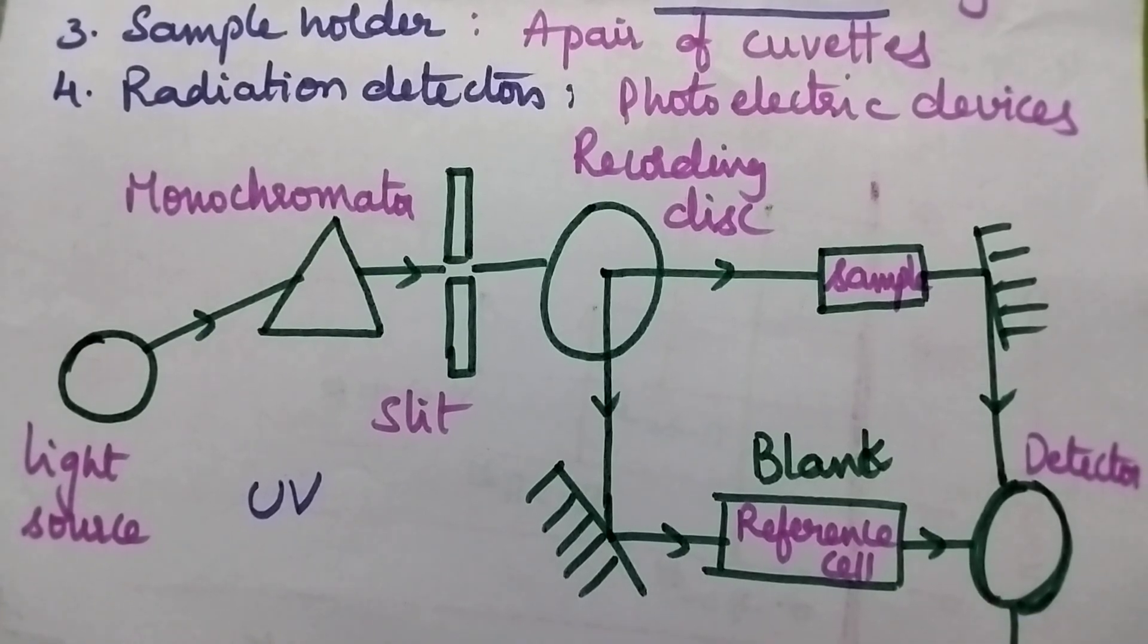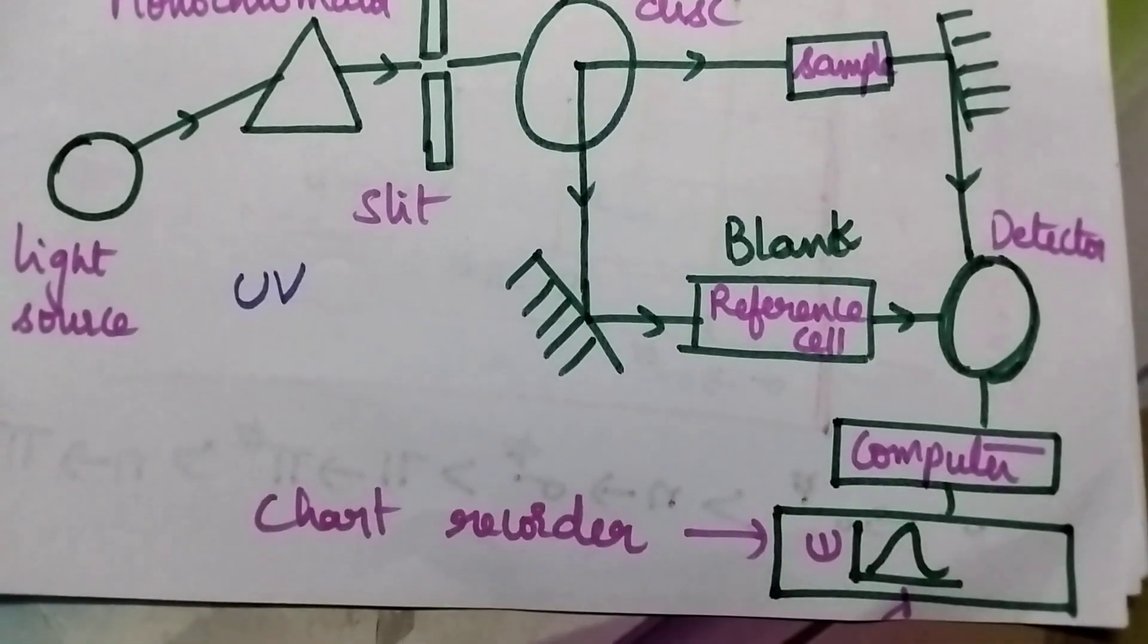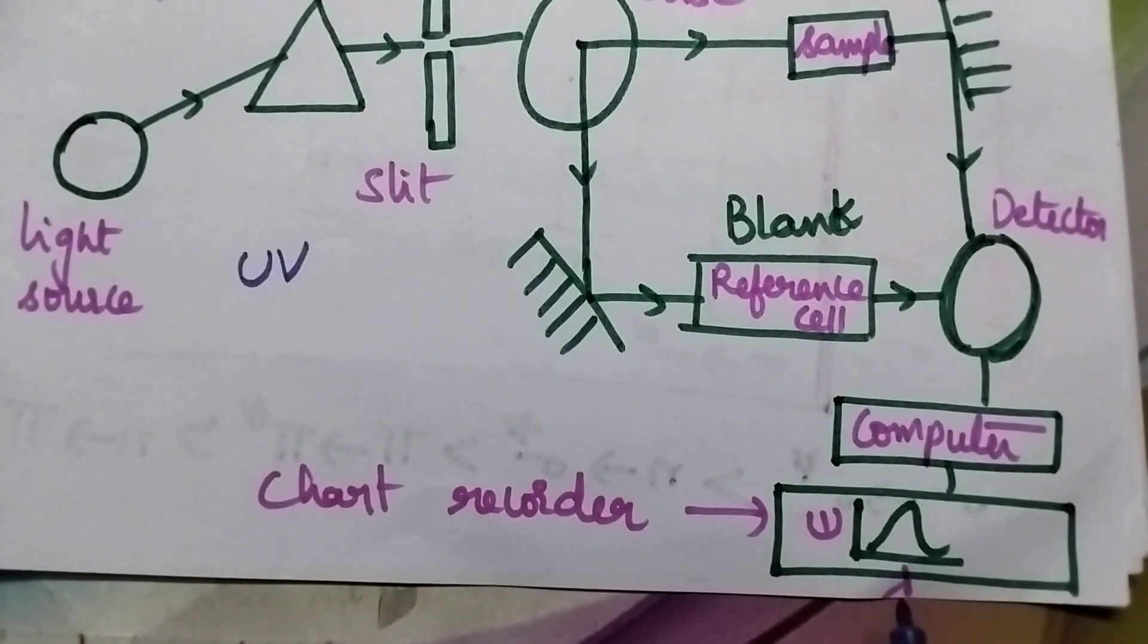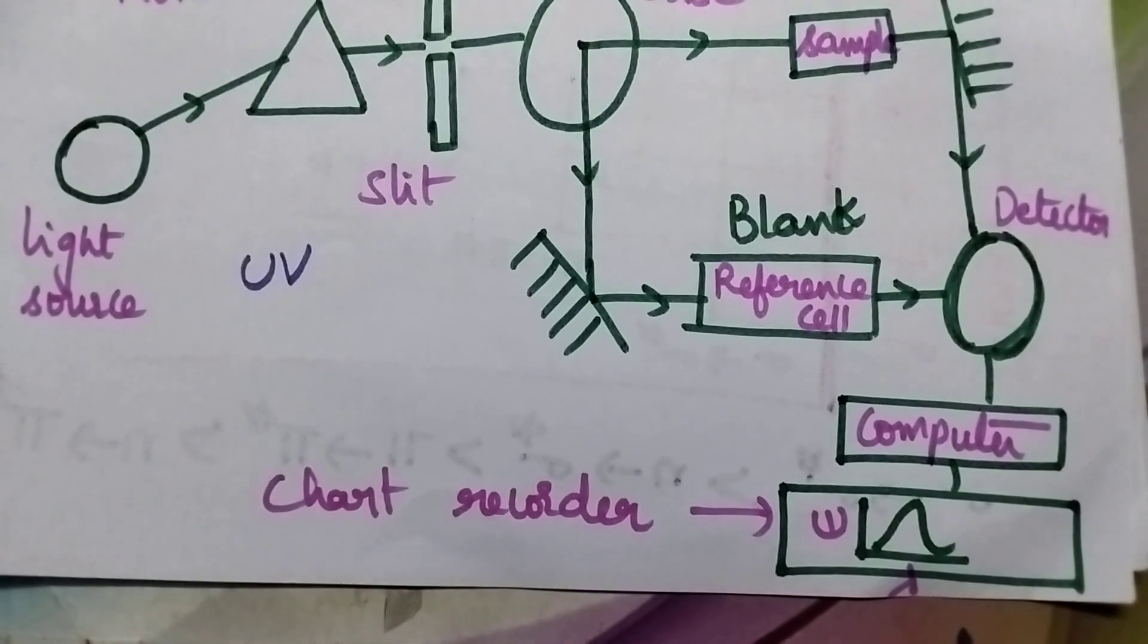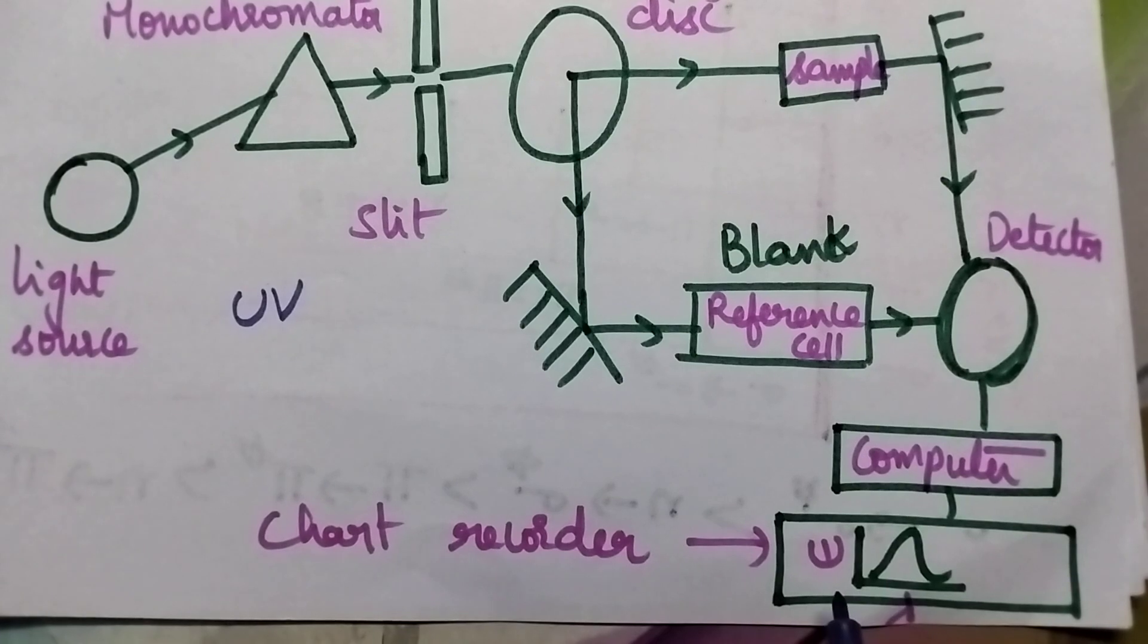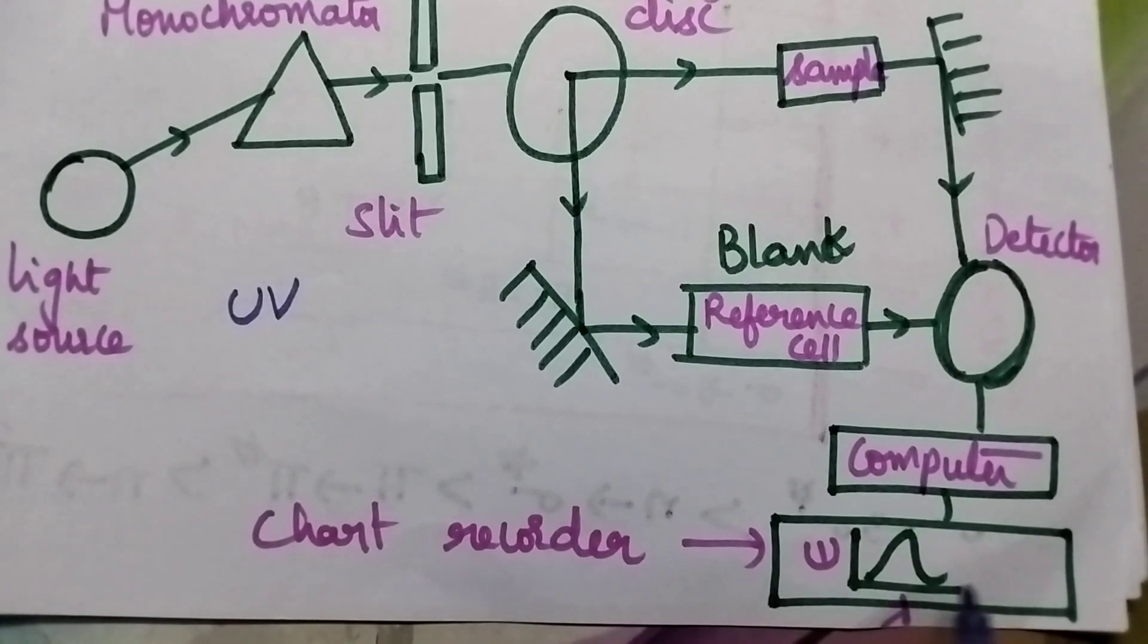The detector is attached to the computer followed by the chart recorder where it gives a spectrum. UV spectrum is always drawn between the wavelength and the absorbance. It yields a parabola.